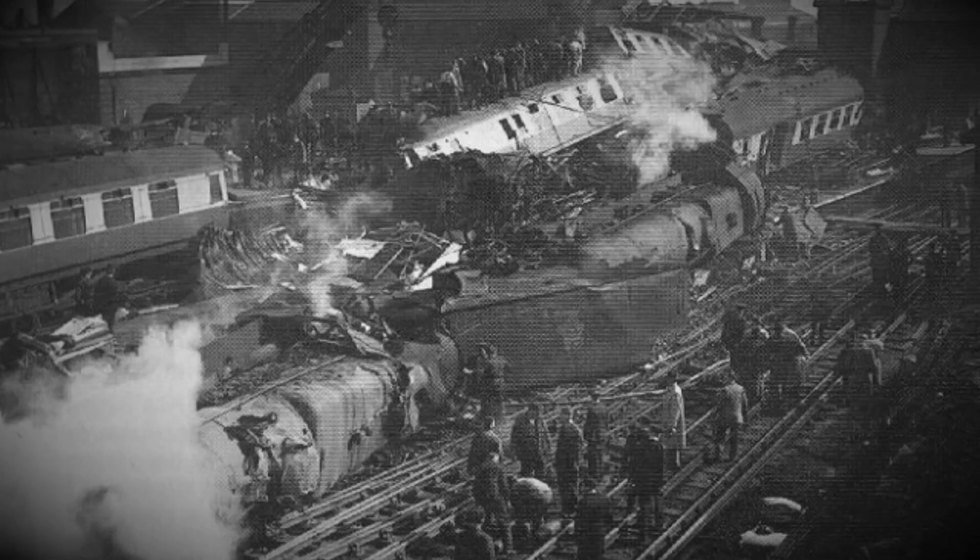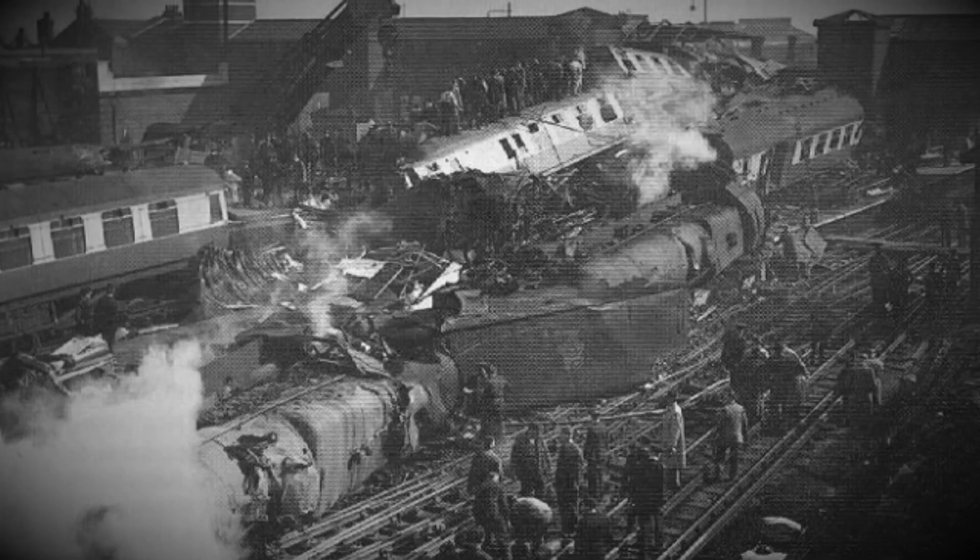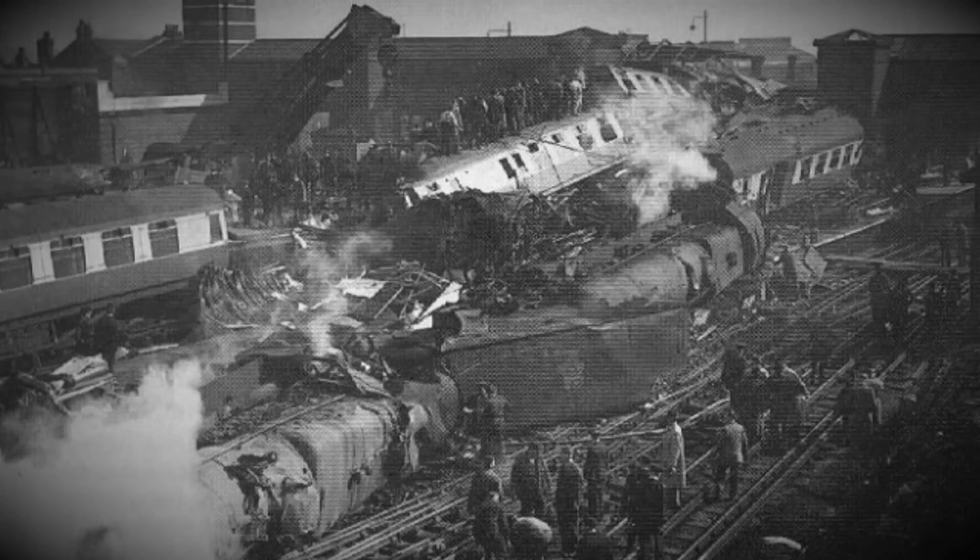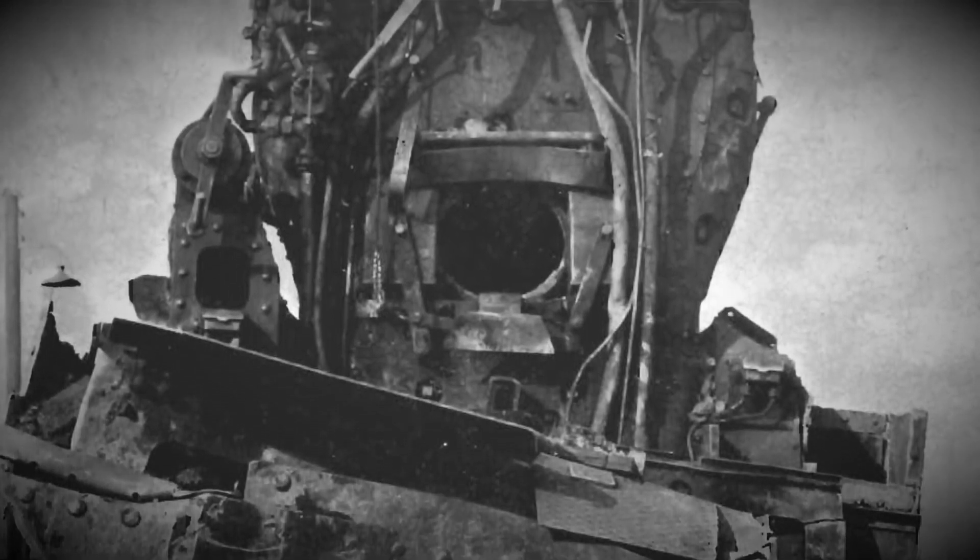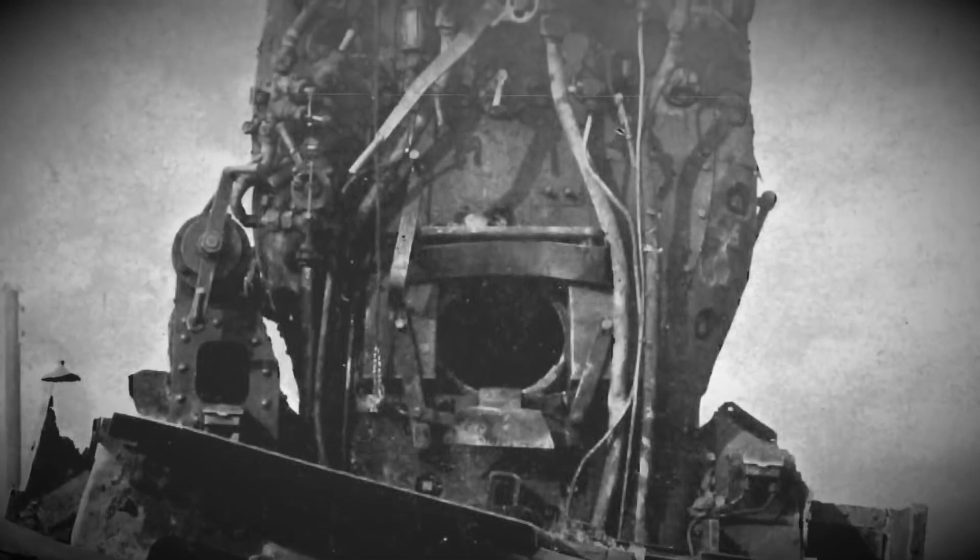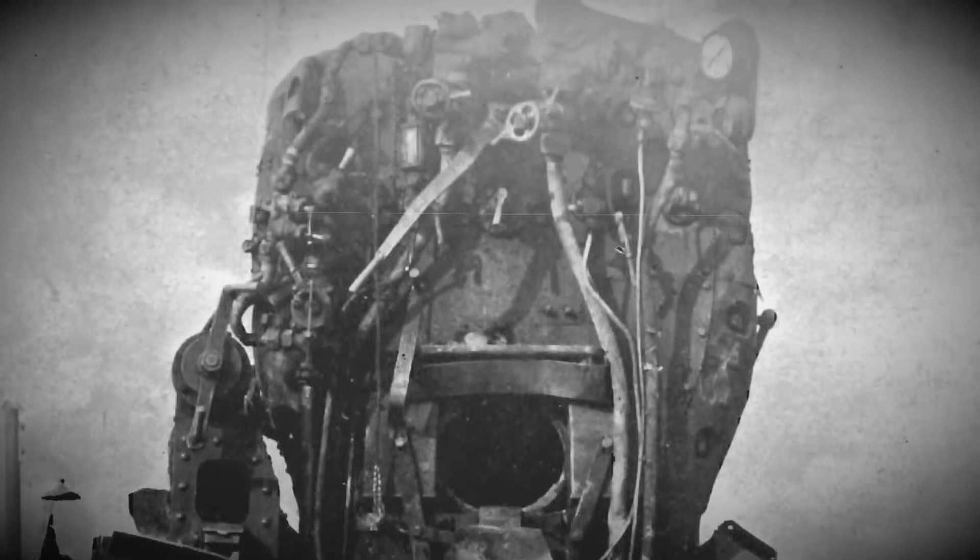The death toll from the crash would be the highest on the railway in peacetime at 112: 102 of whom died on the scene with 10 later on in hospital. Both the fireman and the driver of the Perth train were killed, as well as the driver of the Liverpool train's lead locomotive. But that wasn't the total human cost. 340 people were reported as injured, of which 183 people were given treatment for shock and minor injury at the station, and 157 were taken to hospital with 88 being hospitalized.